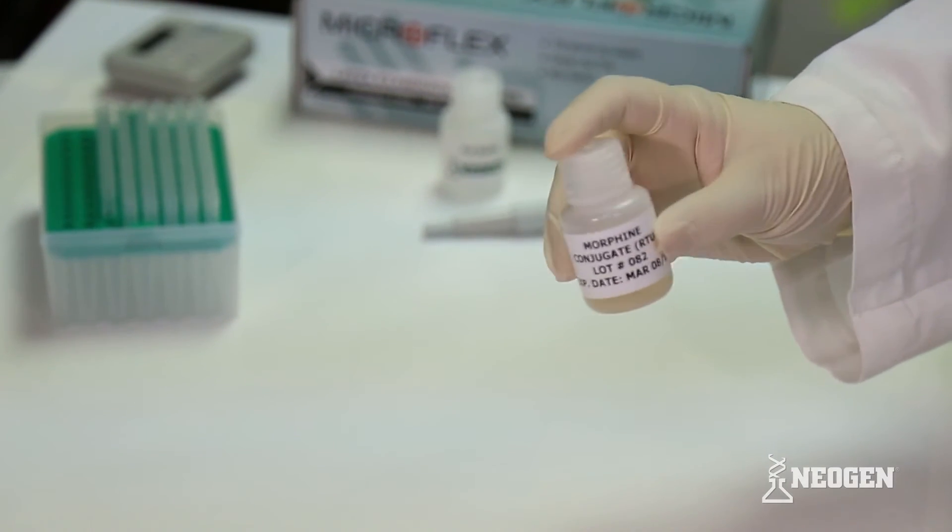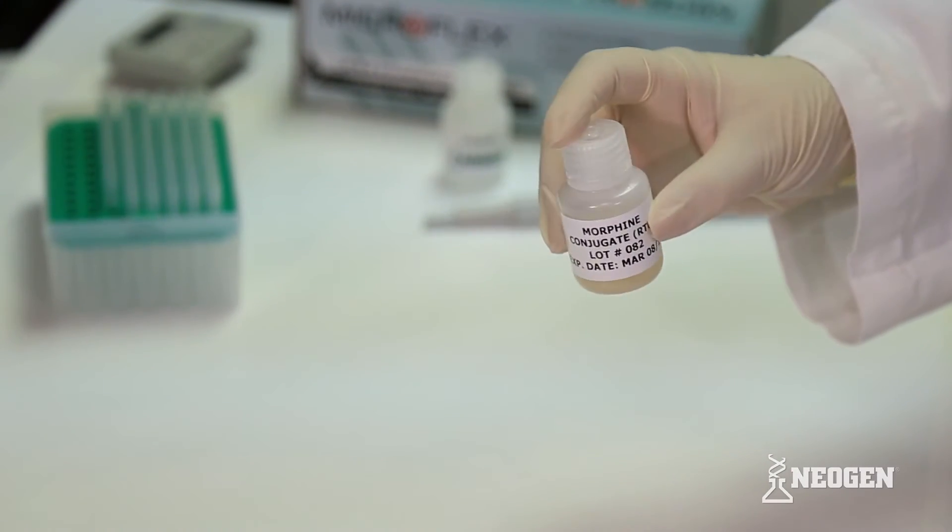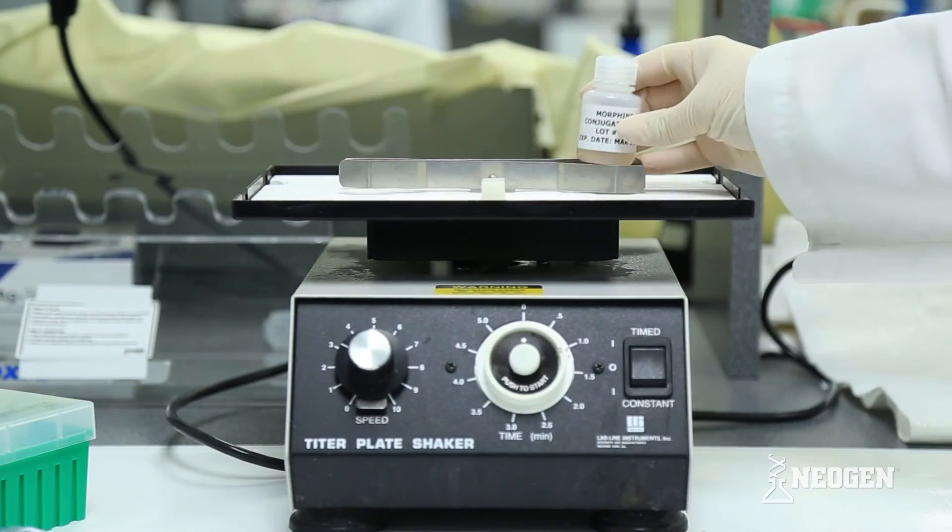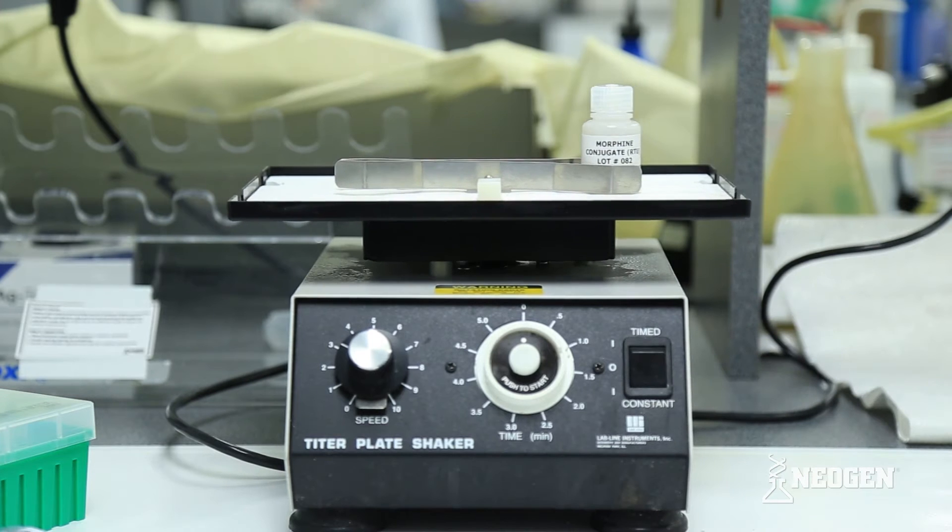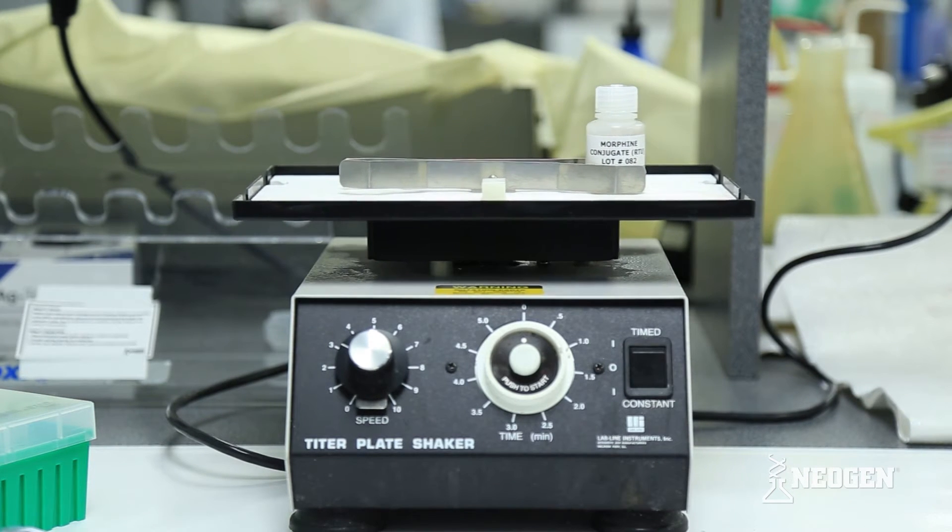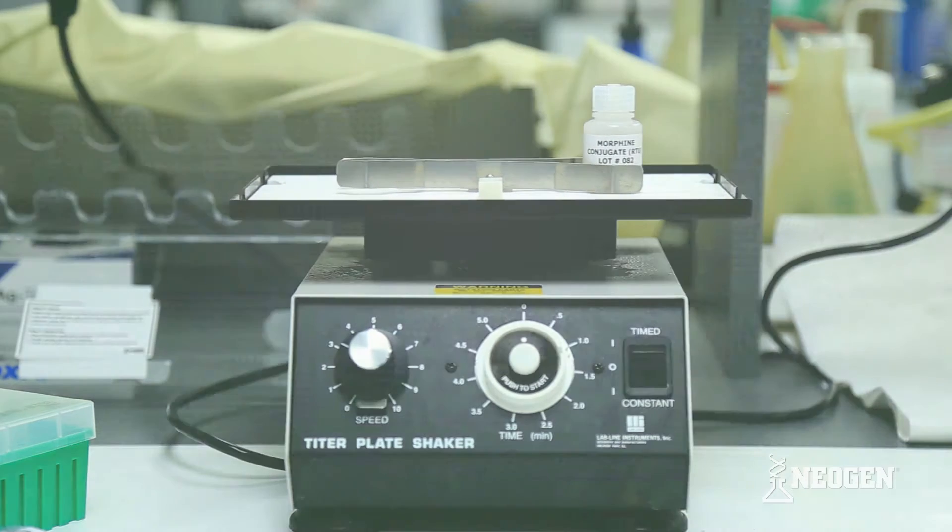Gently mix the ready-to-use conjugate solution by inverting the bottle a minimum of 15 times or by placing the solution on a rocker for 5 minutes. Do not vortex or shake this solution vigorously, as this will compromise the integrity of the conjugate and thus your results.